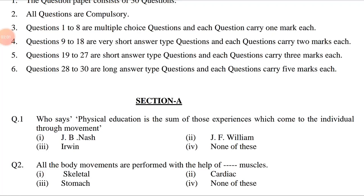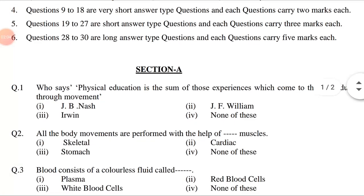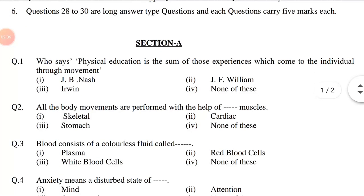Question 2: All the body movements are performed with the help of dash muscles. Option 1: Skeletal. Option 2: Cardiac. Option 3: Stomach. Option 4: None of these. Question 3: Blood consists of a colorless fluid called dash. Option 1: Plasma. Option 2: Red blood cells. Option 3: White blood cells. Option 4: None of these.